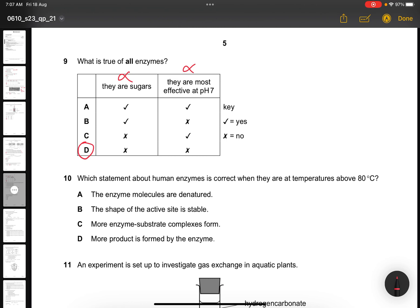Question 10. Which statement about human enzymes is correct when they are at temperature above 80 degrees? This is above the denatured temperature already. The answer will be A, the enzyme molecules are denatured.